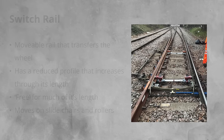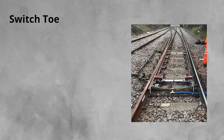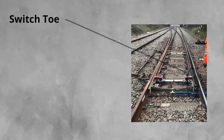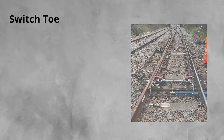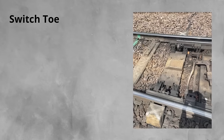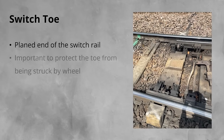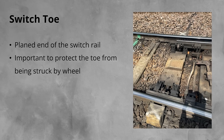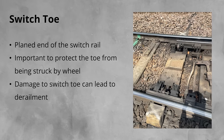Each end of the switch rail is known by a different name. The switch toe is at the planed end of the switch. When looking into a set of switches, they are the first part of the switch you will come to. A key part of switch design is protecting the toe. Striking the toe drastically increases the likelihood of the switch being split, where the wheel pushes the switch rail away from the stock rail, leading to trains being on the wrong track and ultimately derailing.